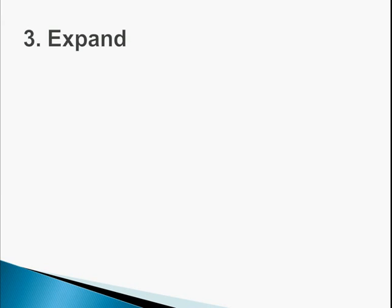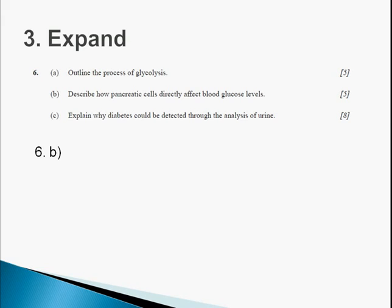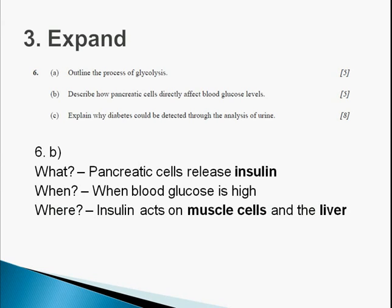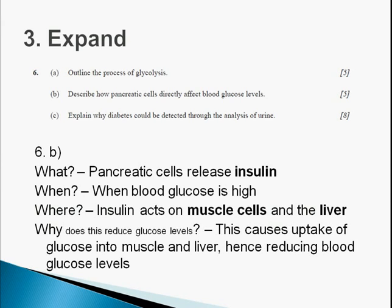The third is to expand it from there. You've defined it. Now, what else can you talk about in the question? Looking at the same question about pancreatic cells affecting blood glucose levels, what does it release? They release insulin. When does it do it? When the blood glucose level is high. And where do they act? This particular hormone acts on muscle cells as well as the liver. And also, why. Why does this reduce glucose levels? By causing the reuptake of glucose into muscle and liver cells, reducing blood glucose levels. So, that's expanding. Remember to do that.